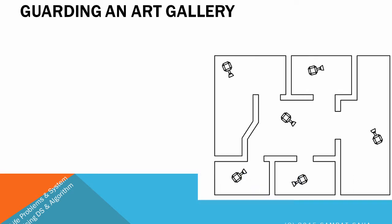Suppose you have an art gallery where you need to place cameras or guards. How many minimum number of cameras or guards can you place so that the whole art gallery is covered or observed? Whenever you say covered or observed, that's actually a visibility problem. You need to place guards in such a way that every point in this art gallery is being observed.